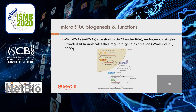MicroRNAs are a class of short non-coding RNAs that negatively regulate gene expressions. Most microRNA loci are transcribed into primary microRNA transcripts. Primary microRNAs are cleaved to generate microRNA precursors, which have a hairpin-like secondary structure. After being transported to the cytoplasm, pre-microRNAs are cleaved to generate a mature microRNA duplex.